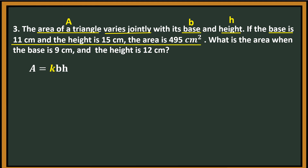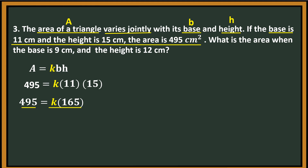Given: base is 11 cm, height is 15, area is 495. By substitution: 495 for the area, we copy the constant K, base is 11, and H is 15. Then multiply 11 and 15 — that is 165. Next, we're going to solve for K by dividing both sides by 165. You can cancel 165, so on the right side only K remains. Then 495 divided by 165 is 3. So this is now the constant.